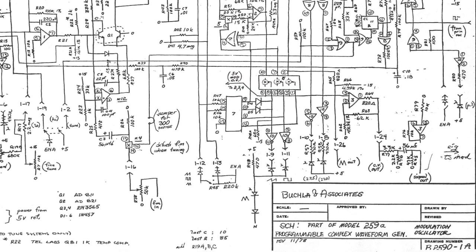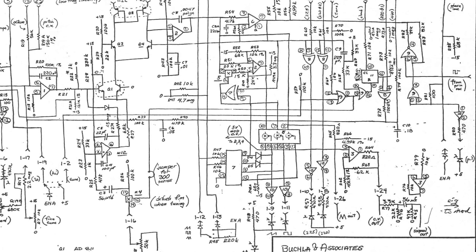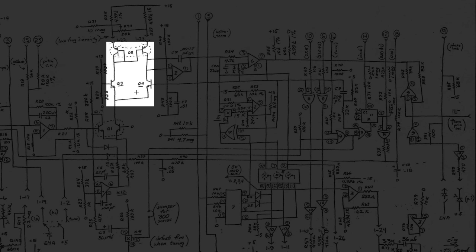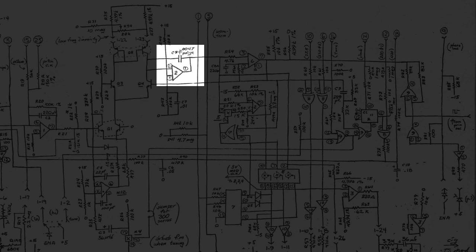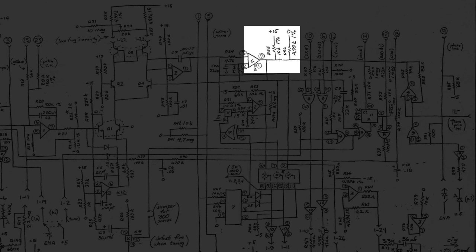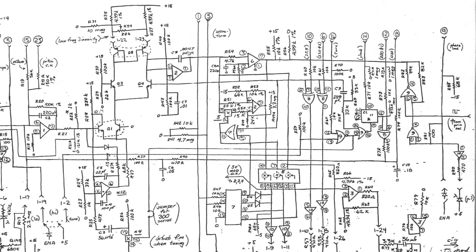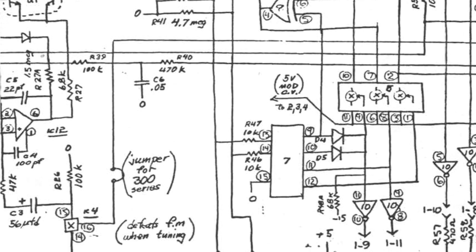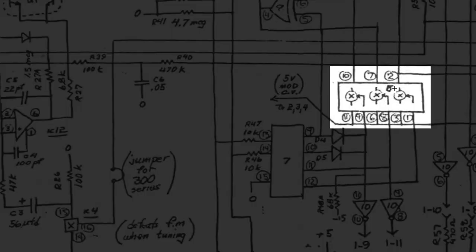In our main triangle core lecture, we looked at the principal oscillator of the 259. But if we take a look at the modulation oscillator, we'll see that it's pretty similar to the principal oscillator. Here's that primitive OTA core, here's the integrating capacitor, here's the network that defines the comparator output when it goes into its tri-state disconnected mode. And if we go down here, we'll see that there's a CMOS switch.